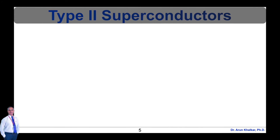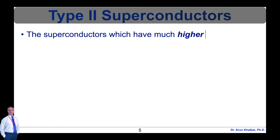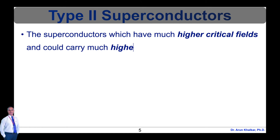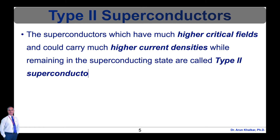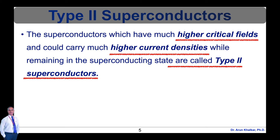Now let's see type 2 superconductors. Starting in 1930 with lead bismuth alloys, a number of alloys were found which exhibited superconductivity. They are called type 2 superconductors. They were found to have much higher critical fields and therefore could carry much higher current densities while remaining in the superconducting state.